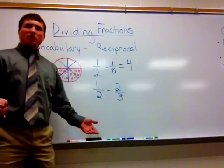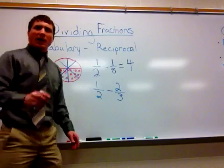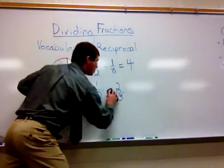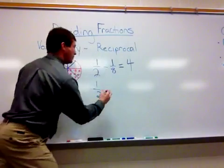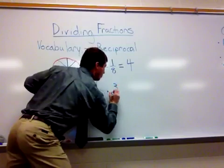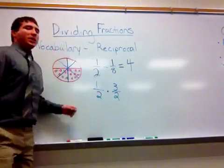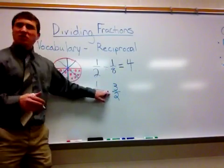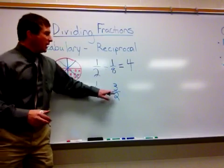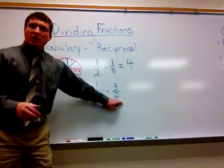So what is the reciprocal of two-thirds? Yeah, three-halves. So I'll multiply it by the reciprocal. That's the first step: change the division sign to a multiplication sign, and then change the number into its reciprocal.